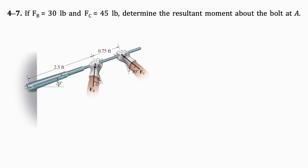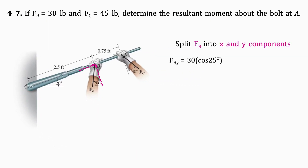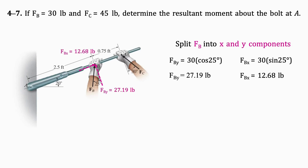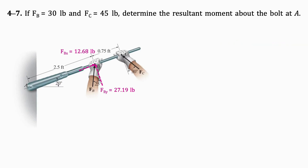First, split FB into X and Y components using the given angle. By doing so, we get FBY equals 27.19 pounds and FBX equals 12.68 pounds.